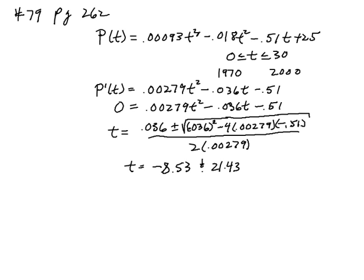Okay, now since our domain is from 0 to 30, the negative 8.53 doesn't have a lot of significance for us other than the fact that it's going to make sure that we get a good test point for our derivative. Negative 8.53 and 21.43. Now 0 is going to be a good test point between our two critical points of negative 8.53 and 21.43.